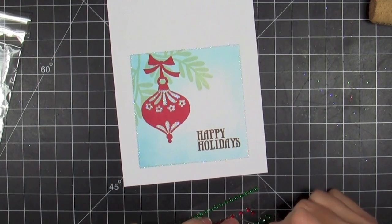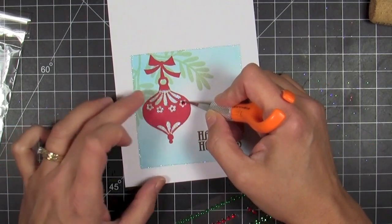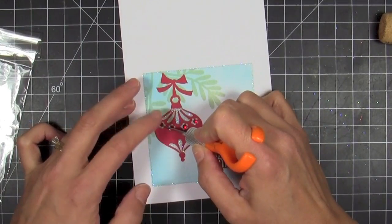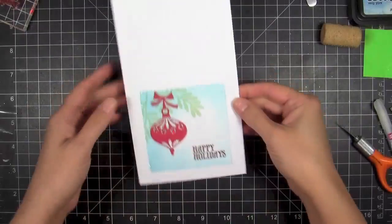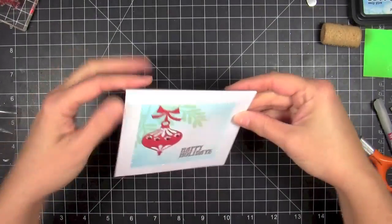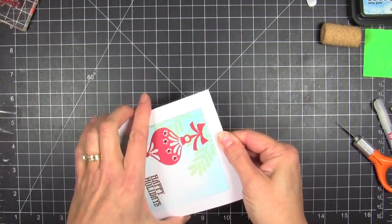Then we'll take some gemstones—these are the red and green gemstones—and I'm just going to take some select sizes to fill in those little flowers. After I folded the card, I decided I wanted to add a few more.